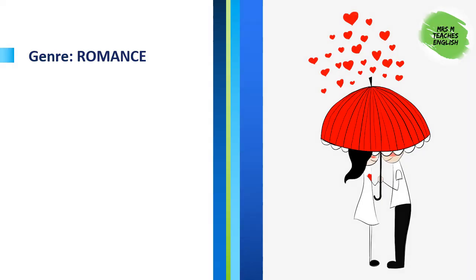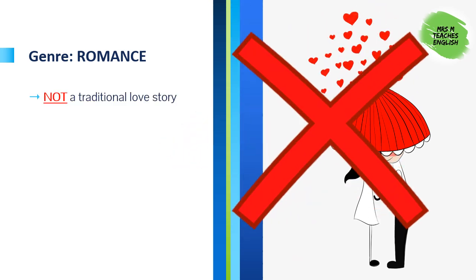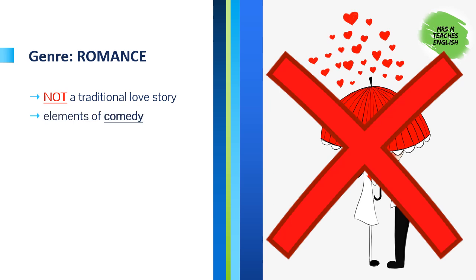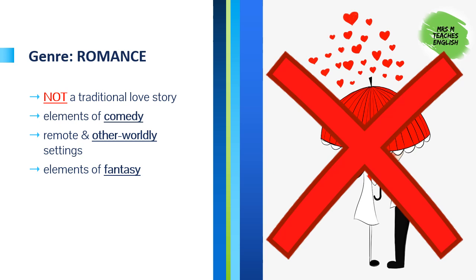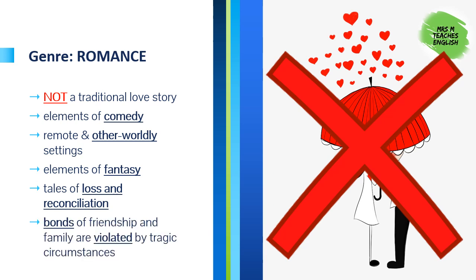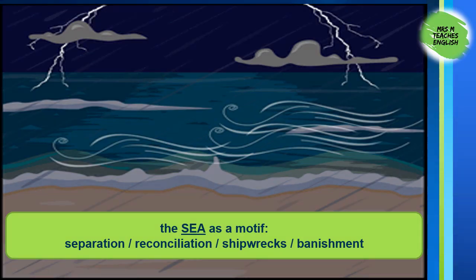Let's pause a moment to consider the genre: romance. This is not a traditional love story. There are elements of comedy in the plot and writing. The settings are often unusual, otherworldly, fantasy. And with these remote, strange settings, you'll find elements of magic and fantasy. The plots are often of loss and reconciliation, with bonds of friendship and family having been violated in some way by tragic circumstances. The sea plays a major role in these later plays of Shakespeare, as an instrument both of separation and reconciliation, through voyages, shipwrecks and banishments.